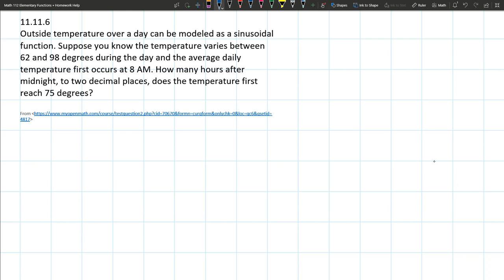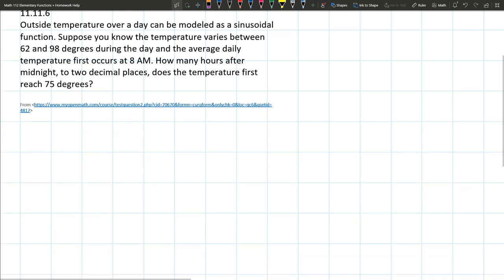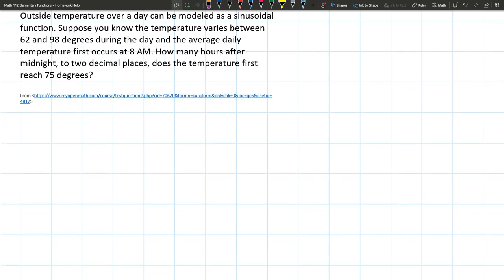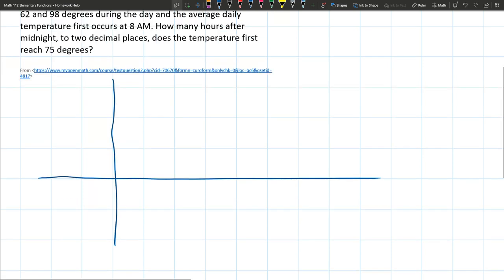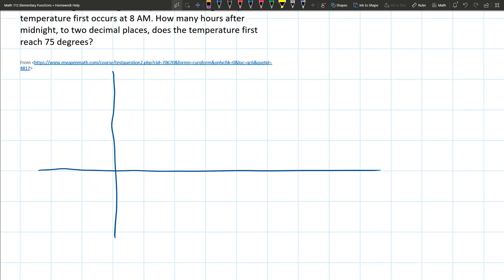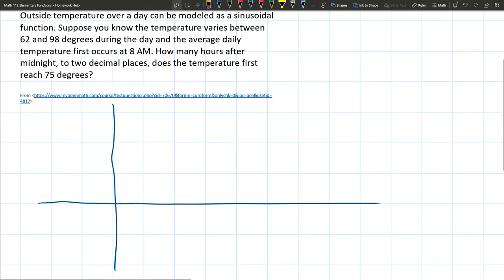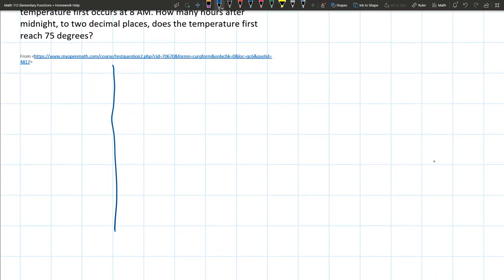We know the temperature varies between 62 and 98 degrees during the day. So let's start with that information. We're going to need some axes here. I'm assuming there's some negative temperatures, but obviously there's no negative temperatures, so let's put the x-axis, or in this case the time axis, way lower.